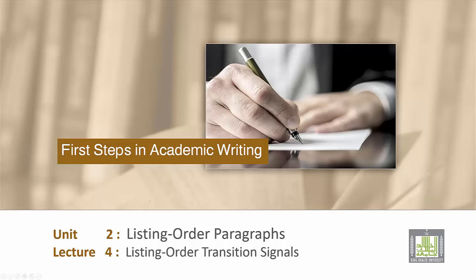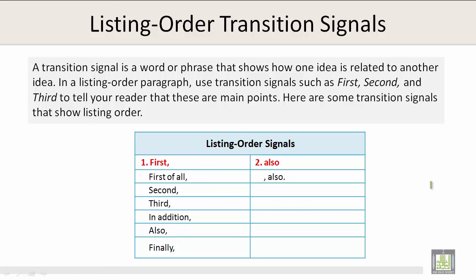Listing Order Transition Signals. A transition signal is a word or phrase that shows how one idea is related to another idea. In a listing order paragraph, use transition signals such as first, second, and third to tell your reader that these are main points.